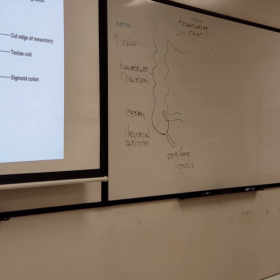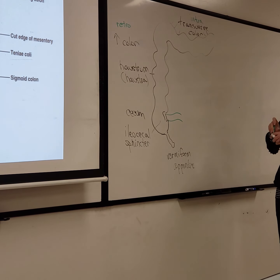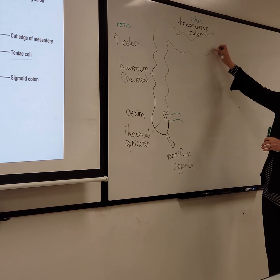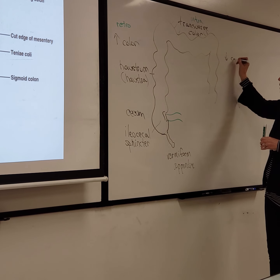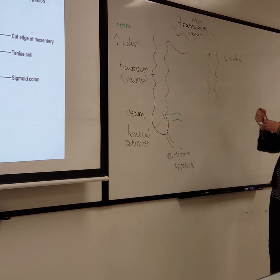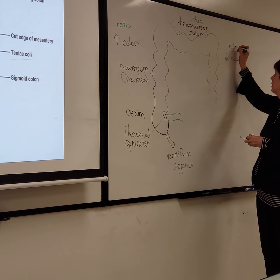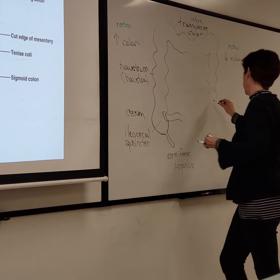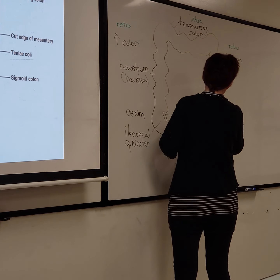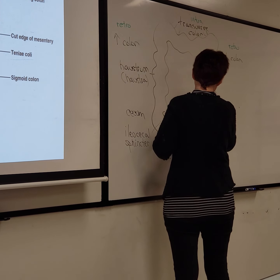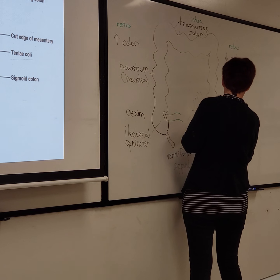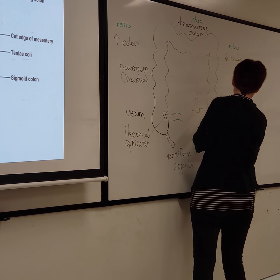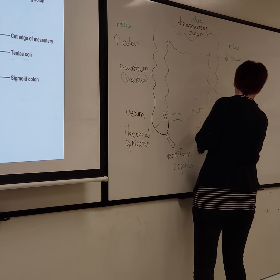The pelvic splanchnic nerves provide parasympathetic innervation beyond the transverse colon. We have the splenic flexure and then descend into the descending colon, which is retro again. There is this S-shaped structure, the sigmoid colon, which also has its own mesentery, so we're back to intra.